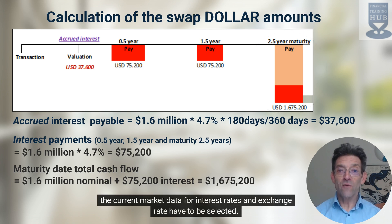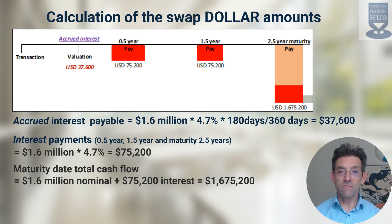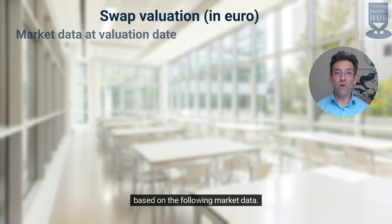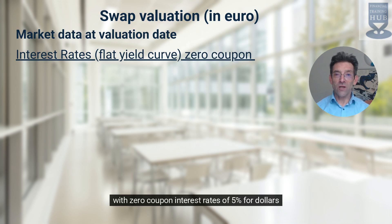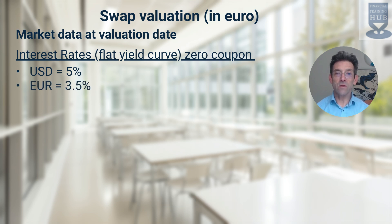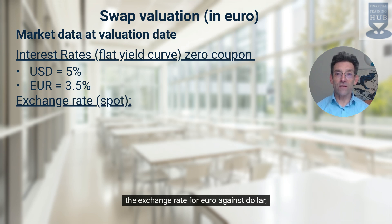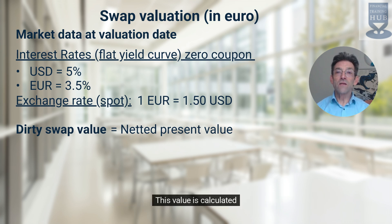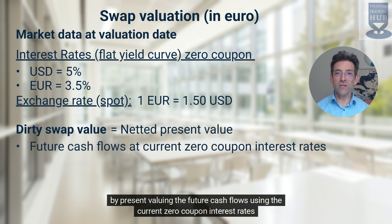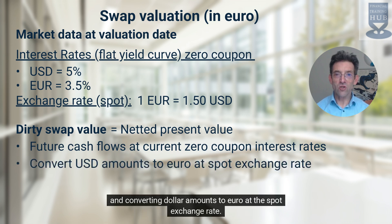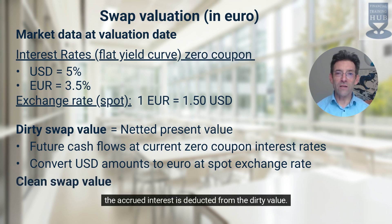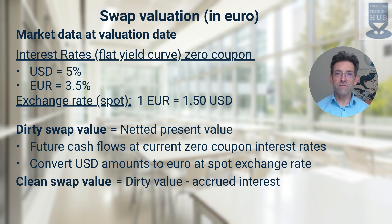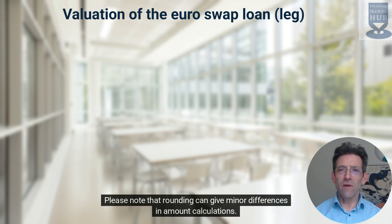To value the swap, the current market data for interest rates and exchange rate have to be selected. After one and a half years from the transaction date, the swap is valued in euro based on the following market data: the yield curve is flat with zero coupon interest rates of 5% for dollars and 3.5% for euros. The spot rate — the exchange rate for euro against dollar — is $1.50 per euro. The dirty swap value is the netted present value of all future cash flows, calculated by present valuing the future cash flows using the current zero coupon interest rates and converting dollar amounts to euro at the spot exchange rate. To calculate the clean swap value, the accrued interest is deducted from the dirty value. Please note that rounding can give minor differences in amount calculations.